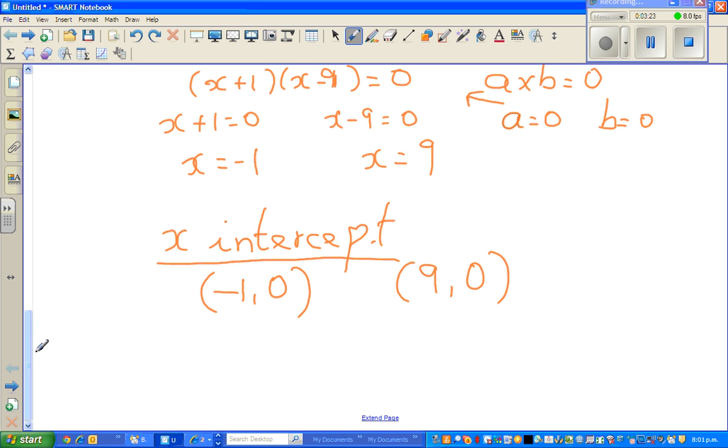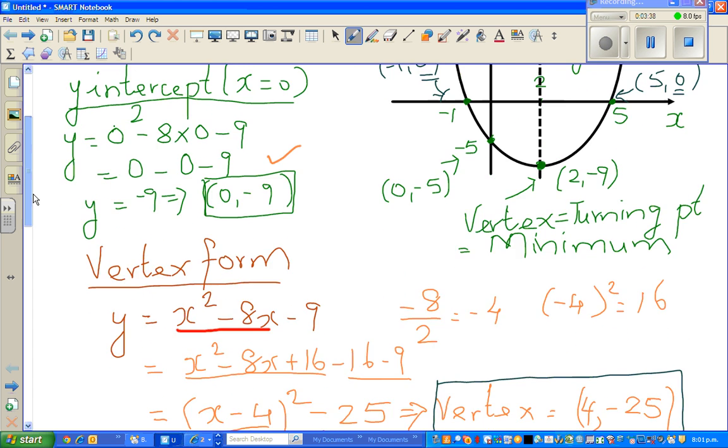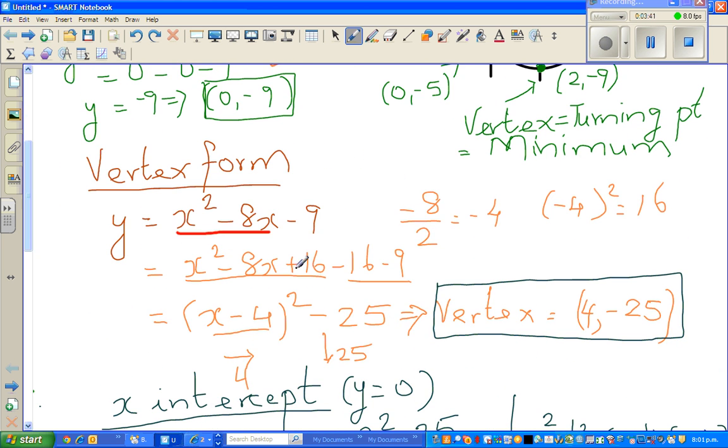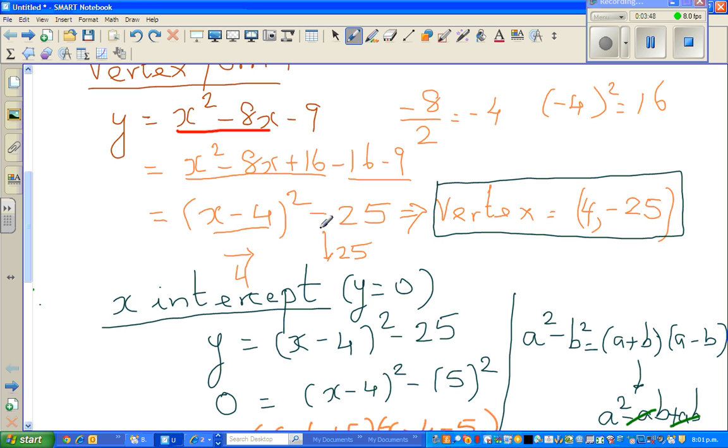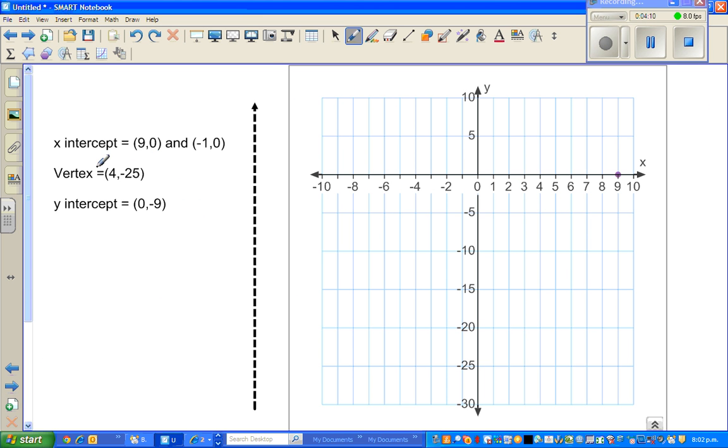X-intercept is when y equals 0. Let us write this as a point: negative 1, 0 and 9, 0. Let me revise. First we saw the y-intercept when x equals 0. Then I got the vertex form by perfect square. This form means the parabola has moved 4 to the right and 25 down. The vertex would be 4, negative 25, and the x-intercepts are negative 1 and 9.